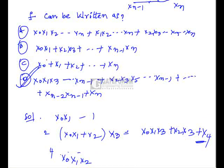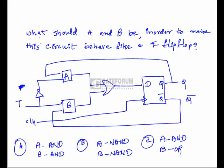The next problem asks: what should A and B be to make the given D flip-flop circuit behave like a T flip-flop? A circuit with a D flip-flop and combinational logic is given, with A and B unspecified. We need to find what gates should be placed at A and B.